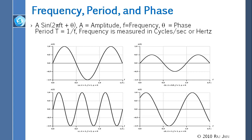Two waves can have different amplitudes but the same cycles, or the same amplitude but different frequencies. Mathematically, we write a signal as A times sine of (2πft + θ), where A is the amplitude, f is the frequency, t is the time, and θ is the phase.